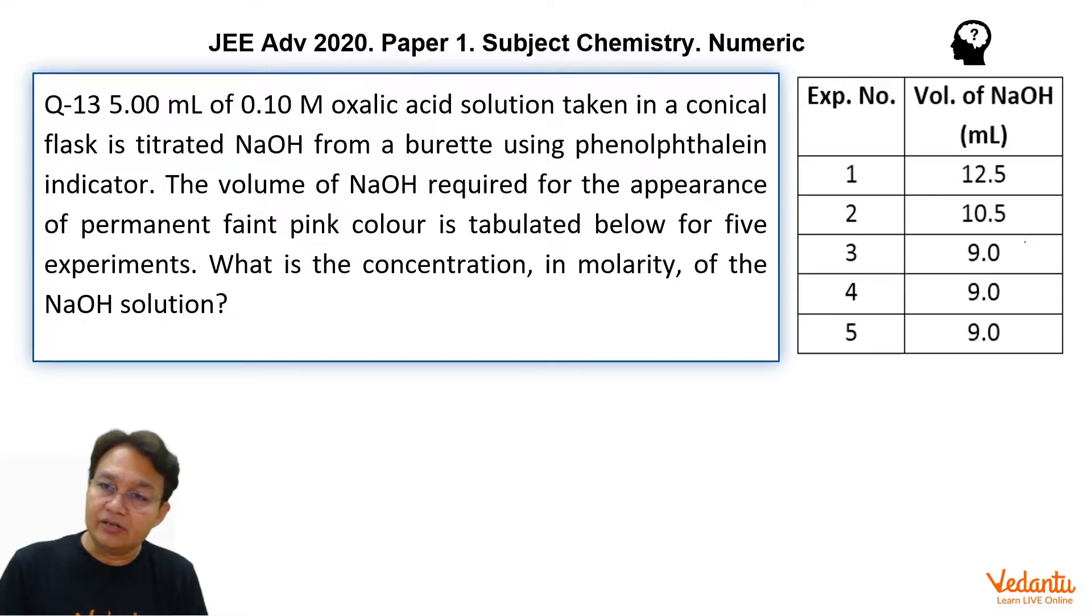So during this titration, 5 times this experiment was carried out. First time you got 12.5 ml volume reading, second time your reading was 10.5, third time it was 9, fourth and fifth 9 as well.